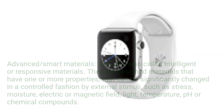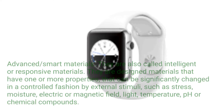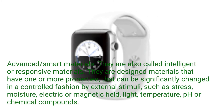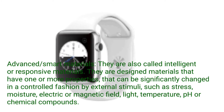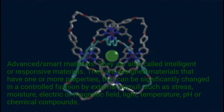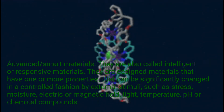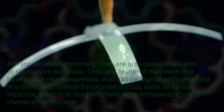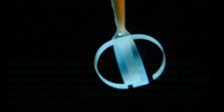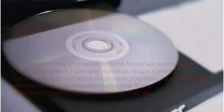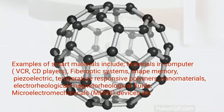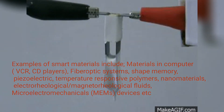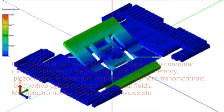Advanced smart materials, also called intelligent or responsive materials, are designed materials that have one or more properties that can be significantly changed in a controlled fashion by external stimuli such as stress, moisture, electric or magnetic field, light, temperature, pH, or chemical compounds. Examples include shape memory materials, piezoelectric materials, temperature-responsive polymers, nanomaterials, electrorheological and magnetorheological fluids, and MEMS devices.